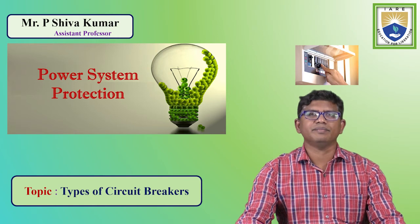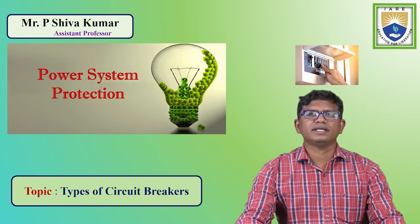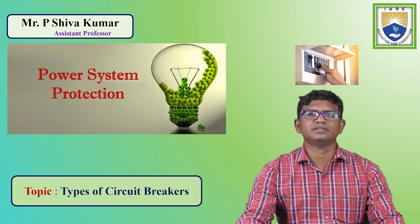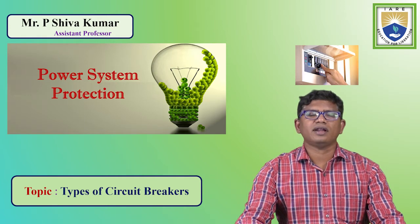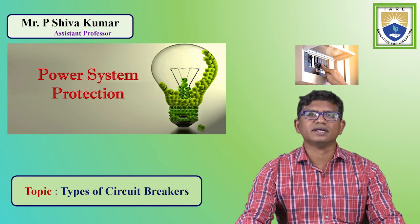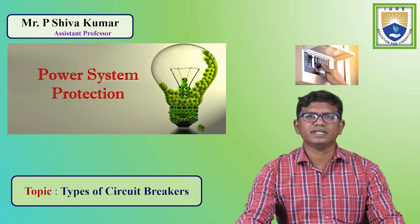When it makes the circuit, it closes the contacts of the device. The circuit breaker is connected along with the source and load terminals. Under normal operating conditions, it makes the circuit — meaning the load will be connected to the source with the help of this switching device.